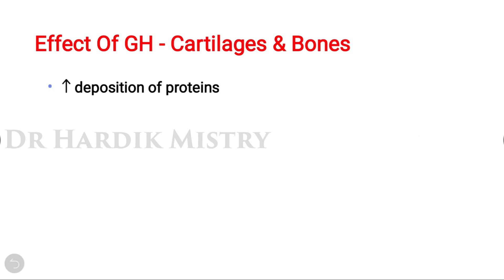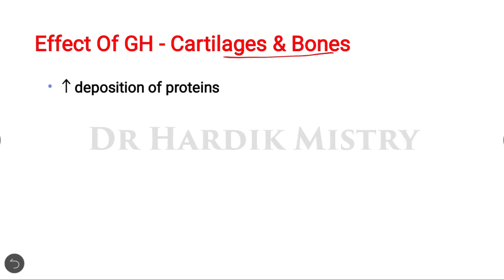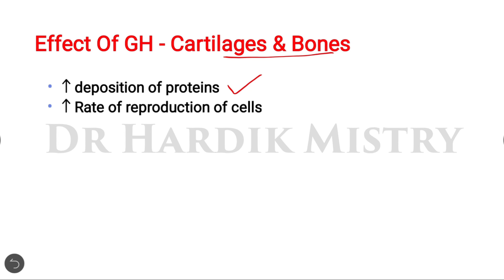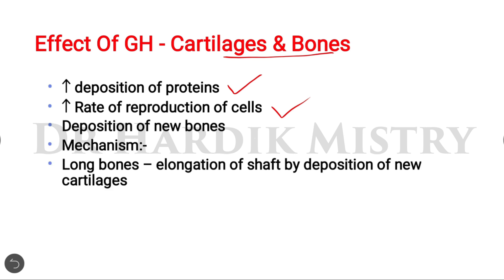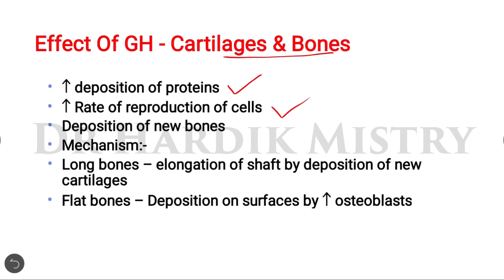Effect of growth hormone on cartilage and bones: it increases the deposition of proteins and the rate of reproduction of cells, and deposition of new bones also takes place. The mechanism: in long bones, elongation of the shaft occurs by deposition of new cartilage. In flat bones, deposition on the surface occurs by increased osteoblasts, which are the cells that help in the growth and development of bone.